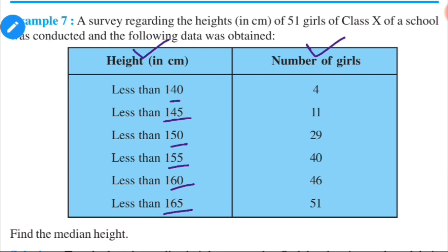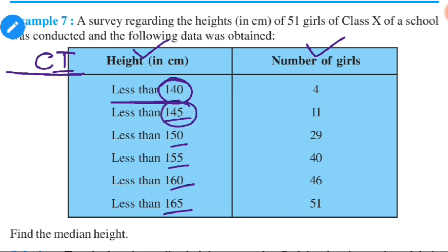If the data is given in less than form, this is not a class interval — first we should find the class interval. Less than 140 means up to 140, so 140 is the upper limit. Less than 145 means 145 is the upper limit. Similarly, 150, 155, 160, 165 are all upper limits. The difference between consecutive values is 5, so the class width is 5.